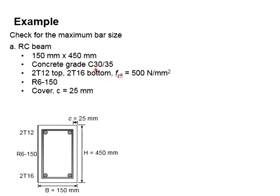The top and bottom reinforcement bars are 2T12 and 2T16 respectively. The Fy is 500 N/mm² and the shear links are 6R6-150 with concrete cover of 25 mm.